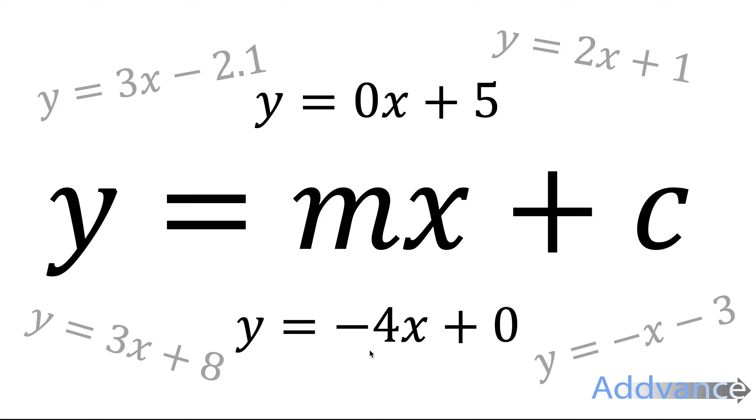Similarly, the y equals minus 4x has an invisible 0 on the end. If you put that invisible 0 on the end, it does make it in the form y equals mx plus c, without actually changing the equation.